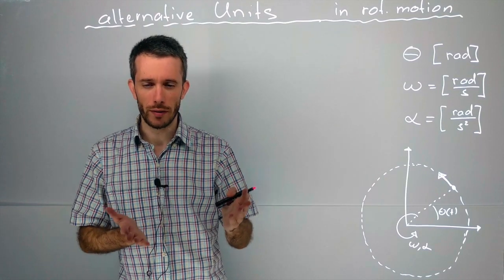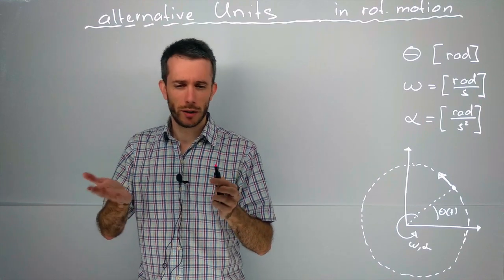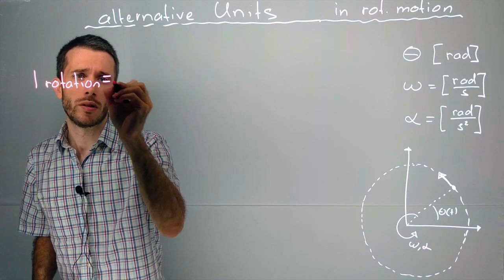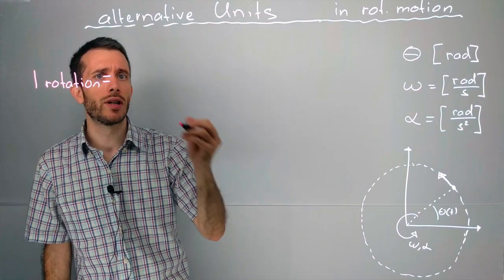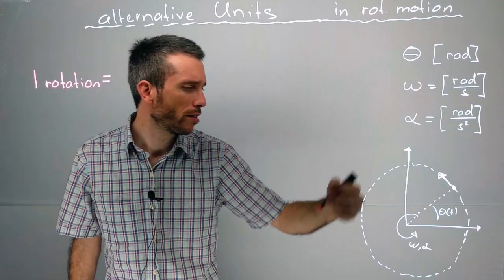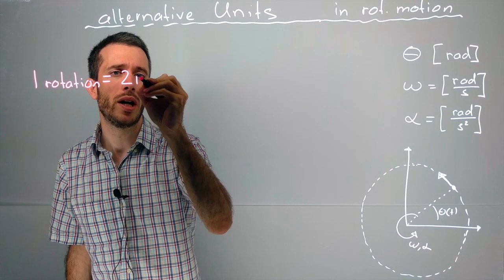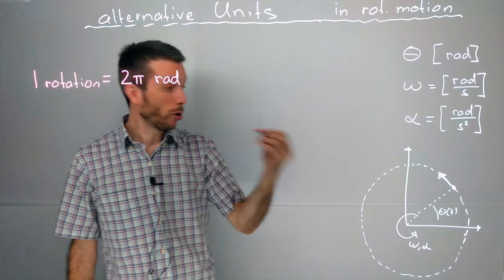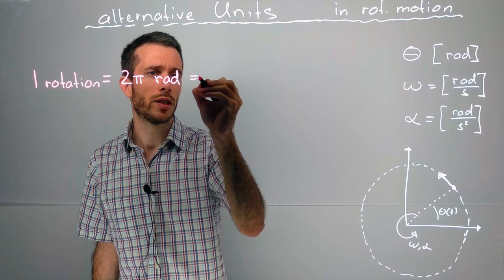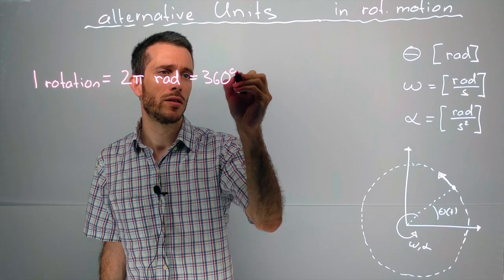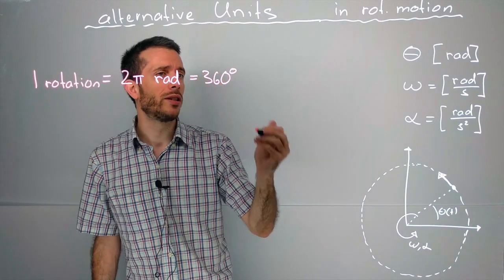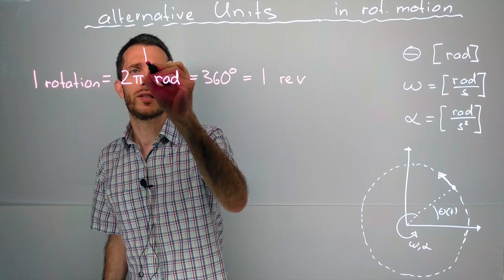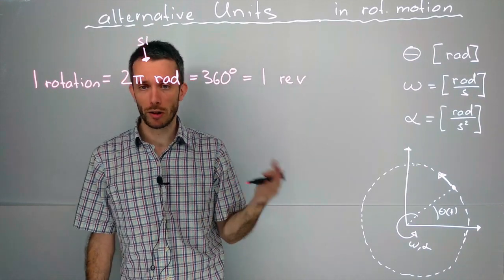Now, what are the alternatives? The main alternatives are the following. We could have one rotation. In radians, let's first look at the SI standard unit. A full rotation is 2π radians. Alternatively, we could give it in degrees, which is 360 degrees. Or another popular unit is revolutions, so 1 revolution. This one is the SI, the other ones are the alternatives.